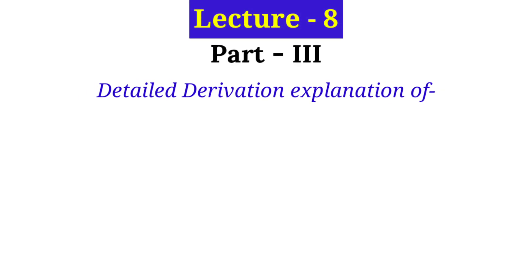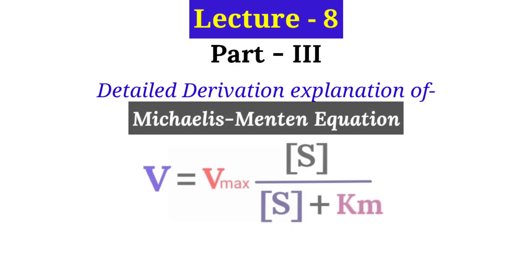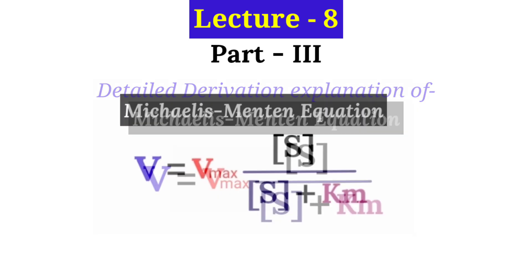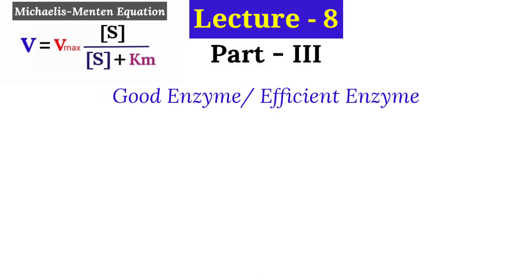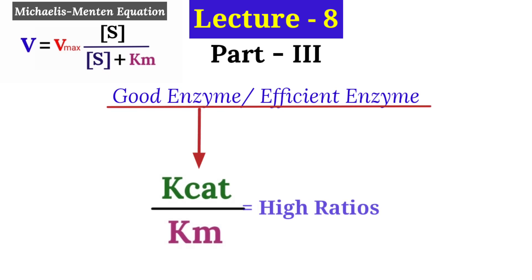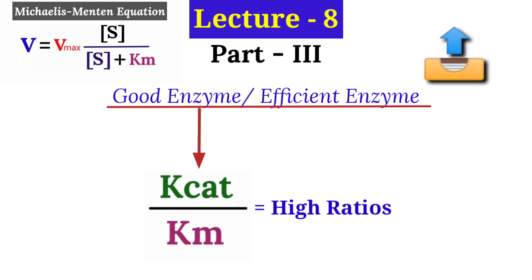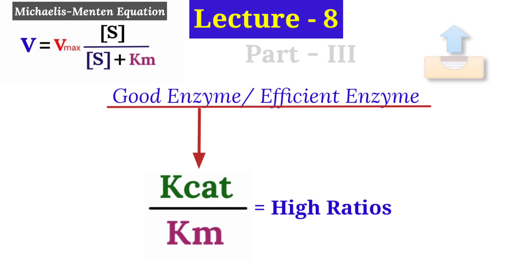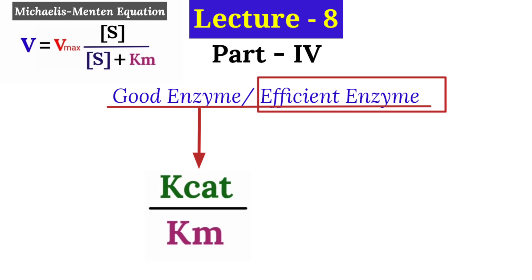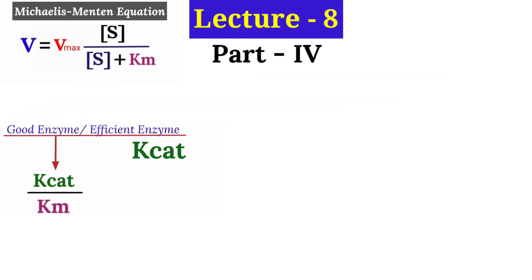Hello friends. In Part 3 we discussed and learned how to derive the Michaelis-Menten equation, and we also saw the definition of a good enzyme — one that shows a high k_cat to Km ratio. On the top right of the screen you will find the link for Part 3 of this lecture. Now let's elaborate on efficient enzyme terms, so we have the k_cat term — from where did this k_cat come?